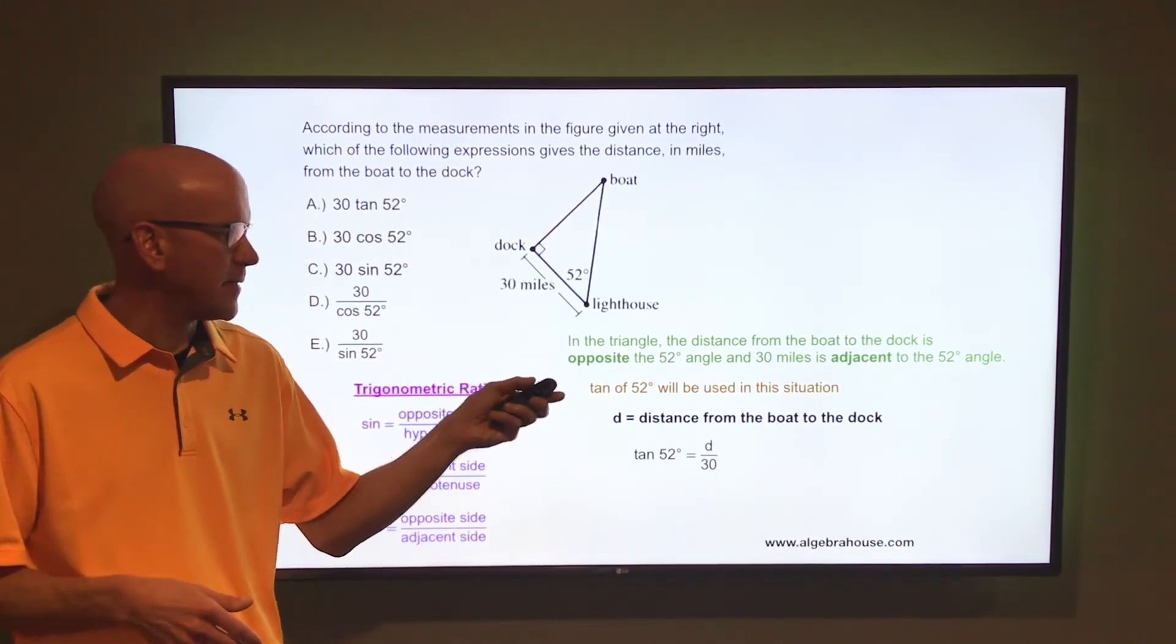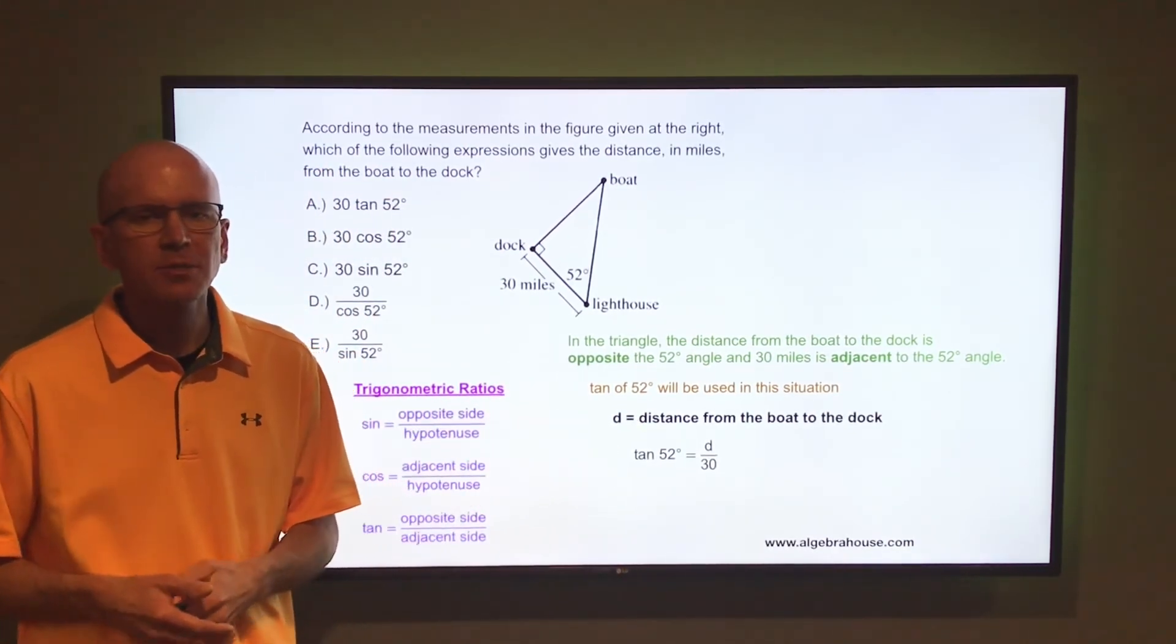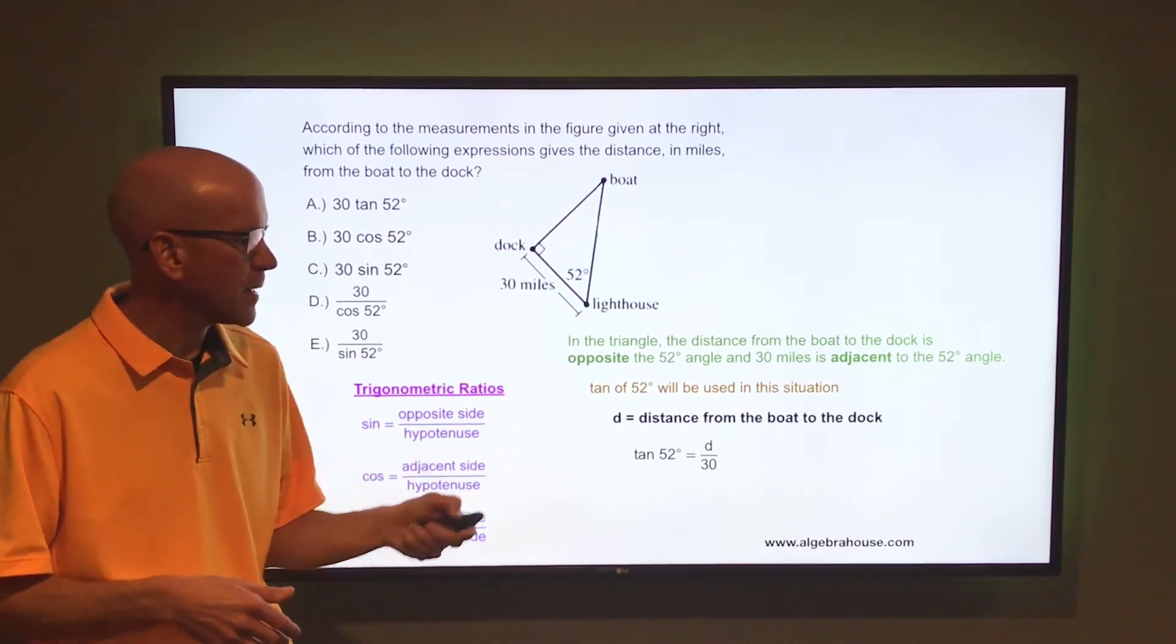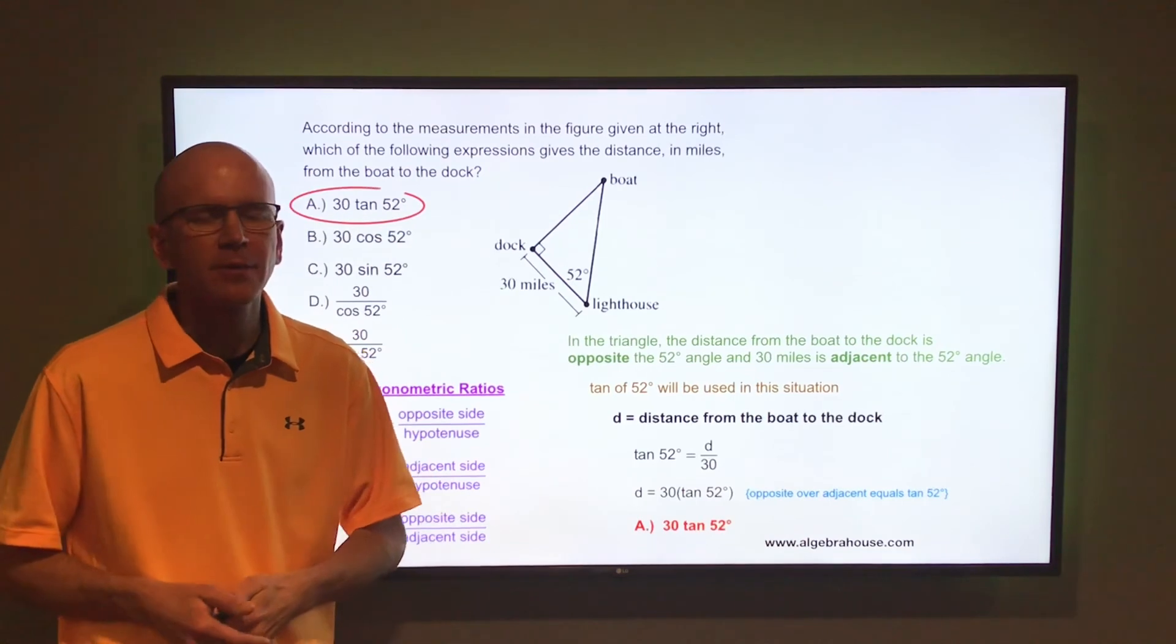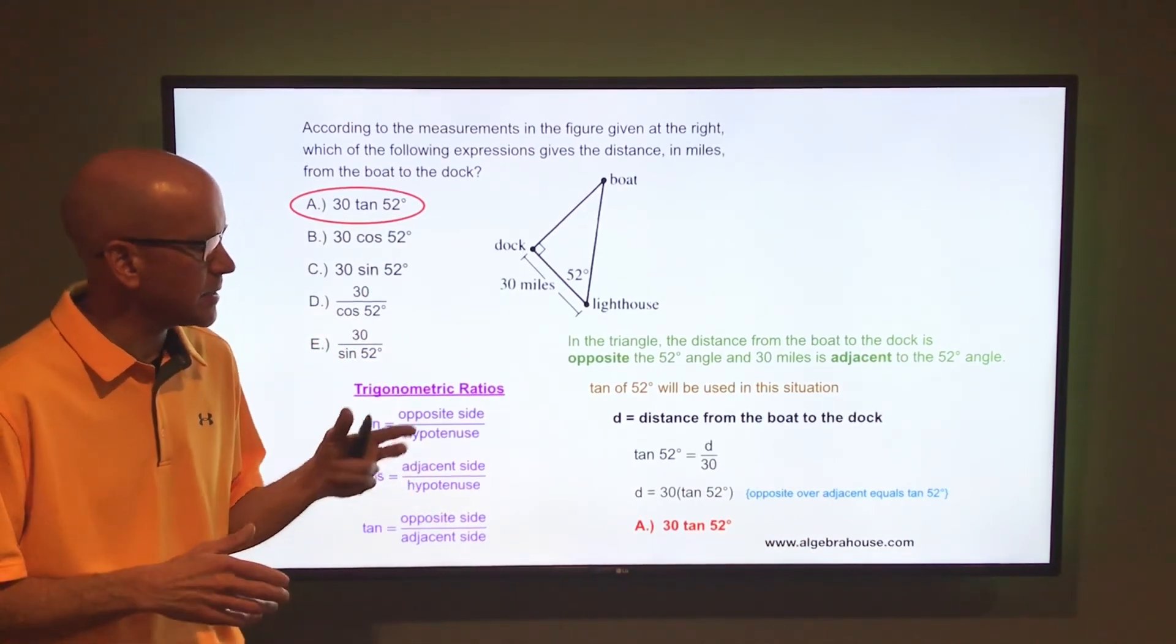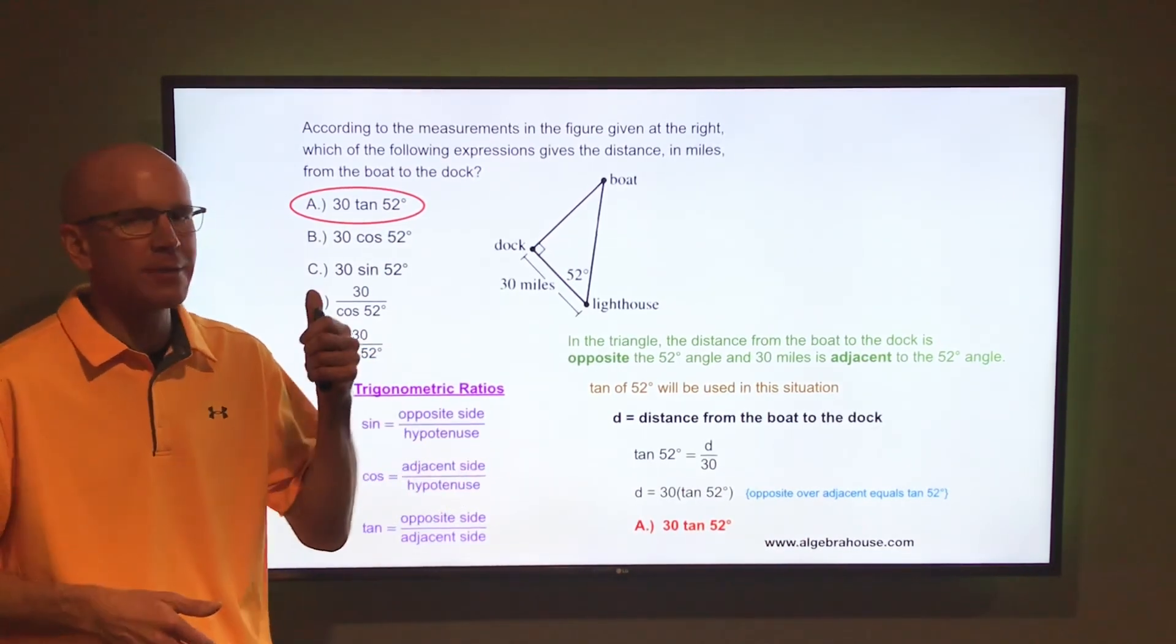So if you want to solve that for D to find that distance from the boat to the dock, just multiply both sides by 30. If you multiply each side by 30, you'd have D equals 30 times the tangent of 52. That is the distance from the boat to the dock and that is letter A.